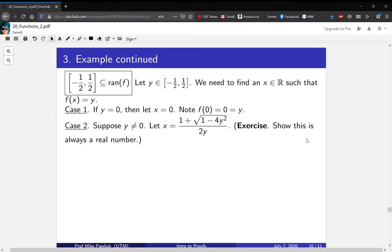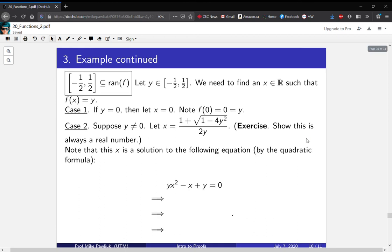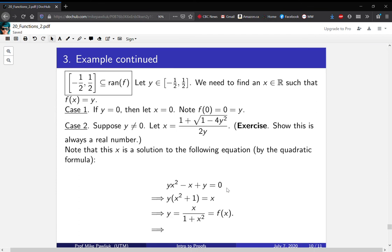Now, this square root should remind you of the quadratic formula. It's actually a solution to this equation, yx² - x + y = 0. Factoring the y gives us y(x² + 1) = x. Dividing both sides by x² + 1 gives us y = x/(1 + x²), and that is f(x). So this x actually gives us an output of y, so y is in the range.